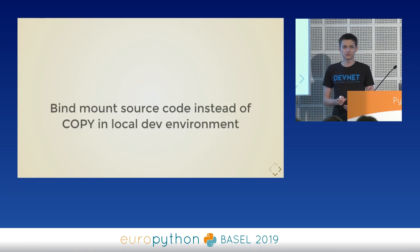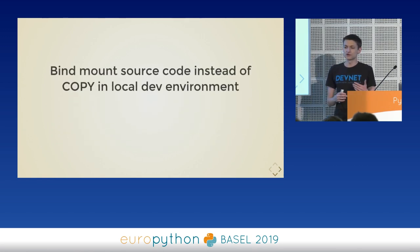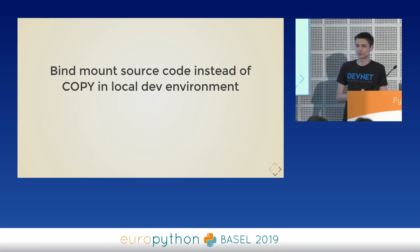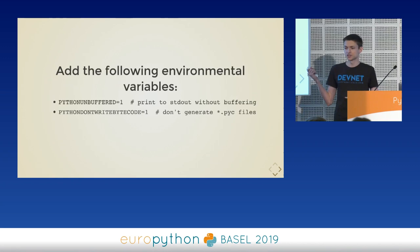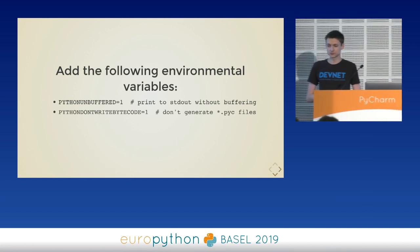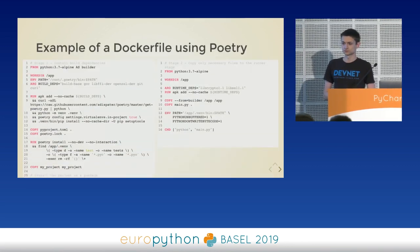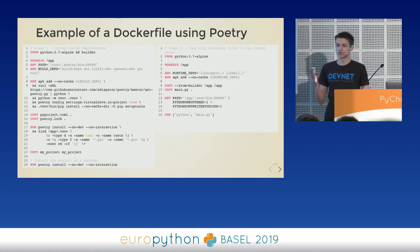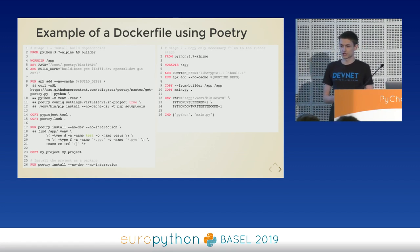A couple of quick suggestions: for local development with slim-stretch, bind-mounting your source code instead of copying it can really pay off, especially for web apps with hot-reload capability — you just change the code and don't have to rebuild the container. Also, add the environment variables PYTHONUNBUFFERED=1 so everything prints to stdout without buffering, and PYTHONDONTWRITEBYTECODE=1 if you don't want to generate .pyc files in your Docker image. You can download slides later where I show an example using Poetry.